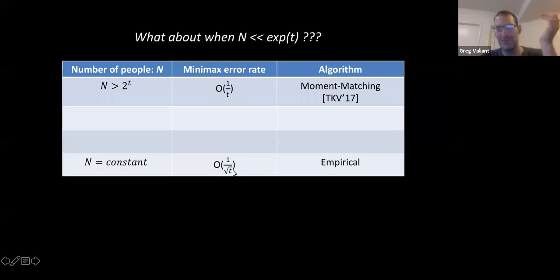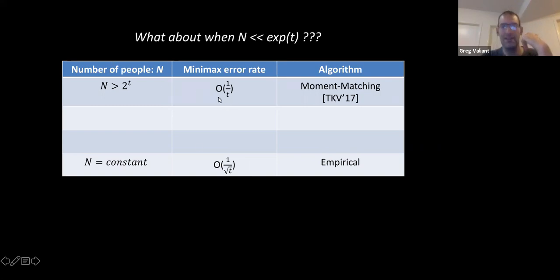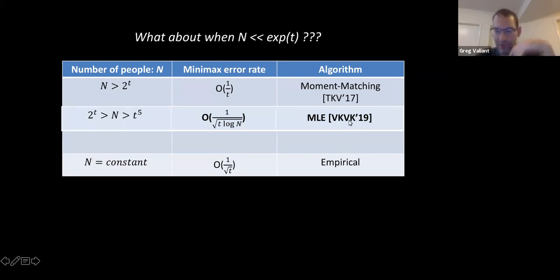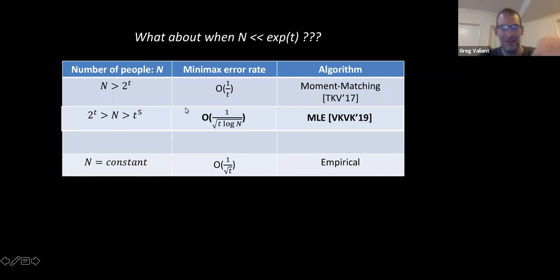To accurately estimate the first t moments you need n, the number of people, to be large — specifically exponential. The question is: what happens if you have fewer than an exponential number of people? If there's just one person, all you can do is use the empirical estimate with error one over square root t. With lots of people we get error one over t. The question is how do you interpolate between these error rates as the number of people goes from constant to exponential. In more recent work, we showed that one does get a smooth interpolation as n goes from polynomial to exponential.